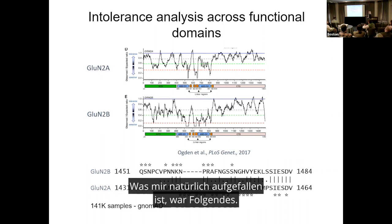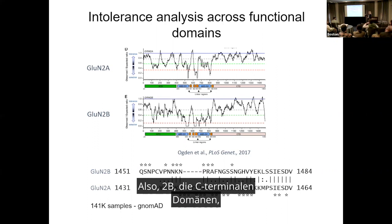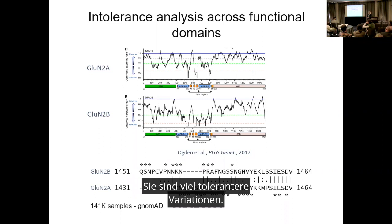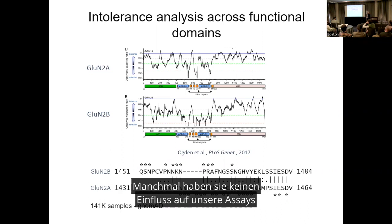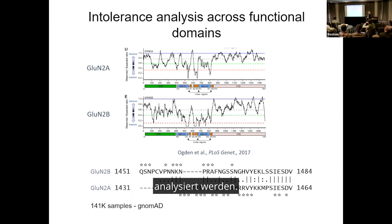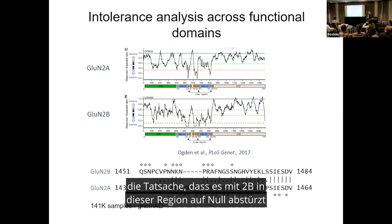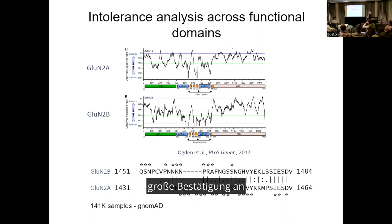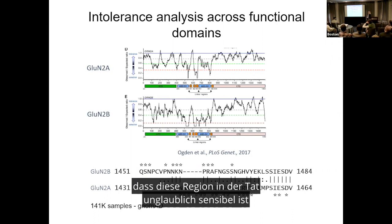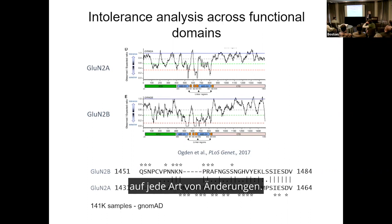What caught my eye was GluN2B — the C-terminal domain is much more tolerant of variation overall. So when we see a variant of unknown significance, sometimes it has an effect on our assays and sometimes it doesn't. But the fact that intolerance crashes to zero in GluN2B in that region we've spent so long studying felt like a lot of validation that indeed that region is incredibly sensitive to any sort of changes.